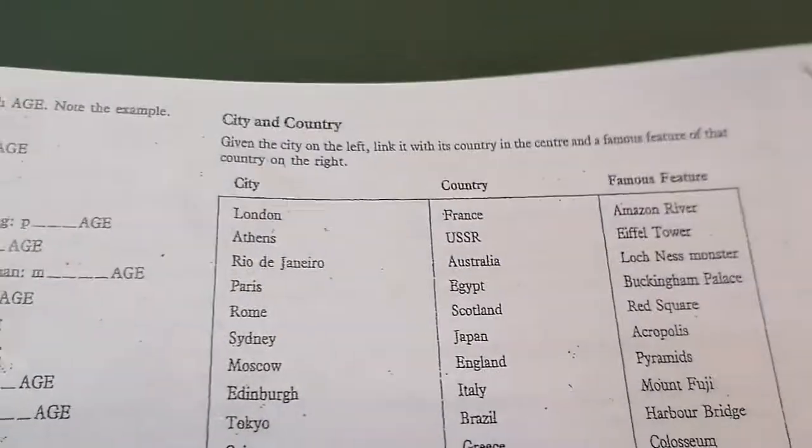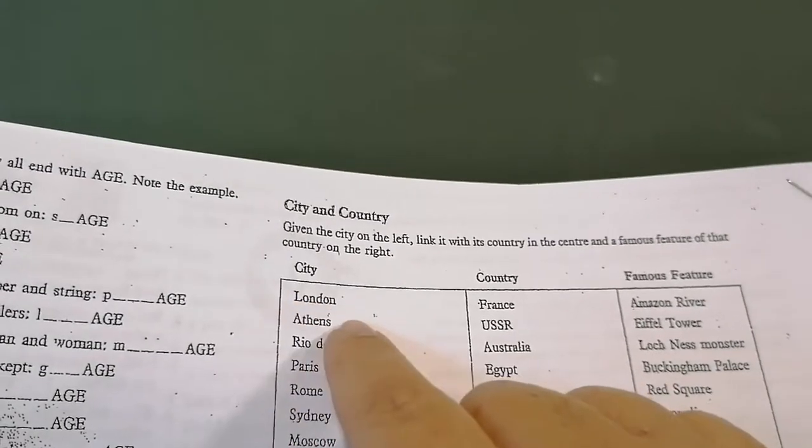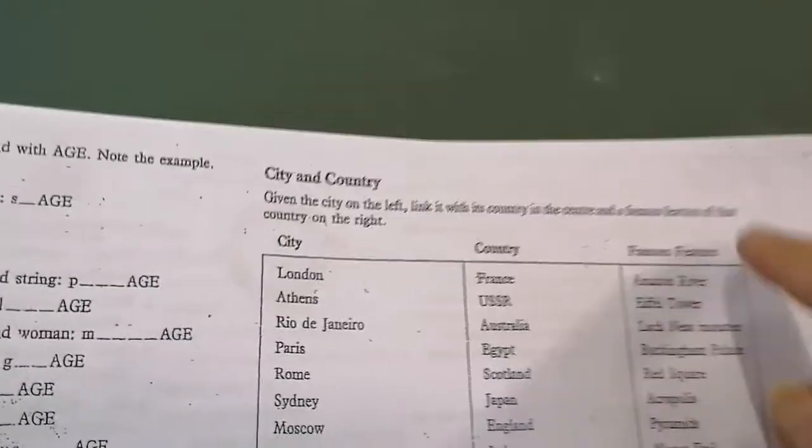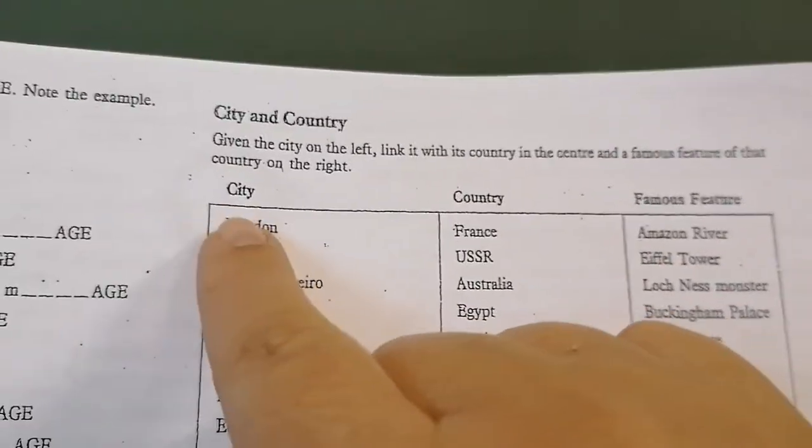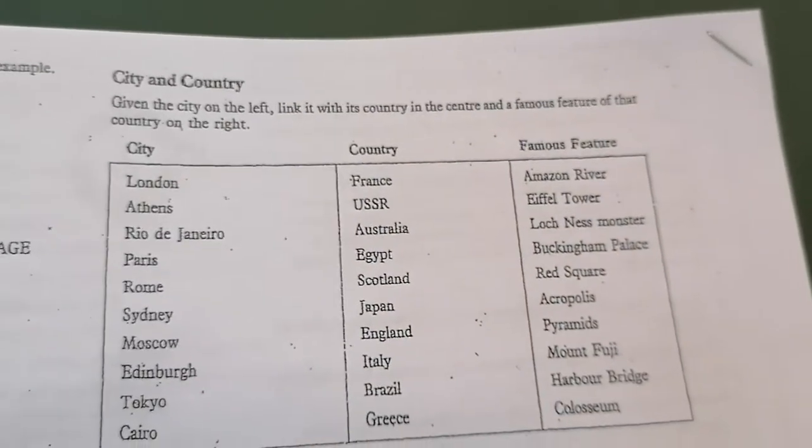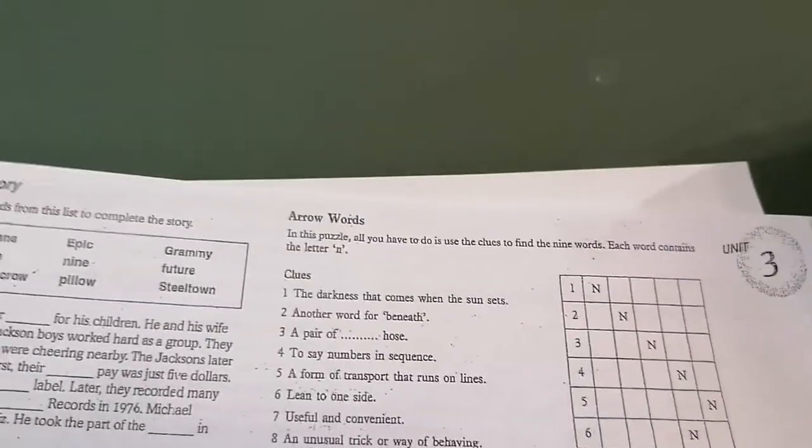Then the others are very simple, you have to, given the city on the left, link it with the country, and then with whatever is famous in that city. Now come on, you know that. It's London, and London is obviously in England, and of course the Queen lives in Buckingham Palace. So these are all very easy-peasy little fill-in answers on these pages, each one of these units.